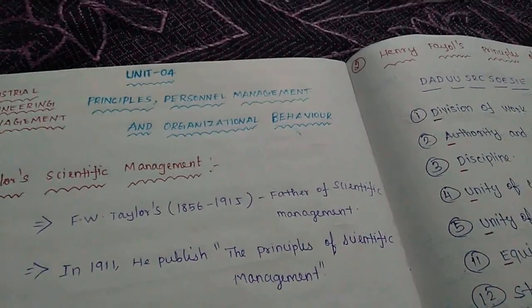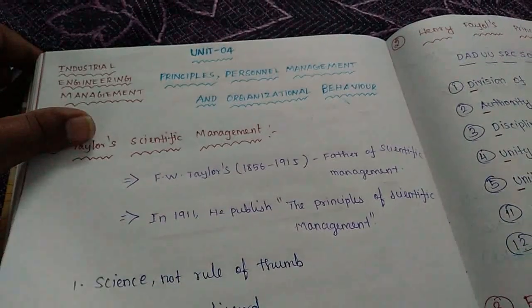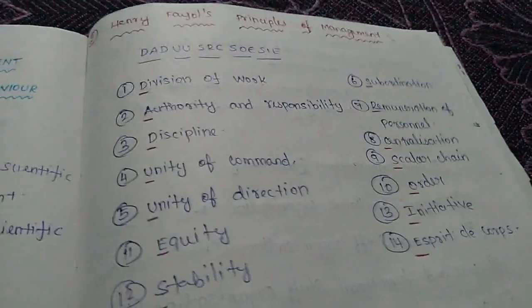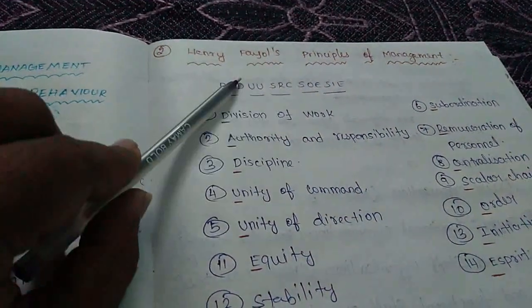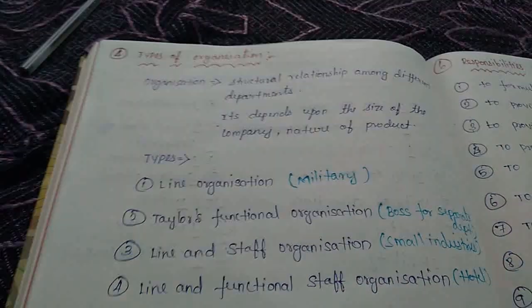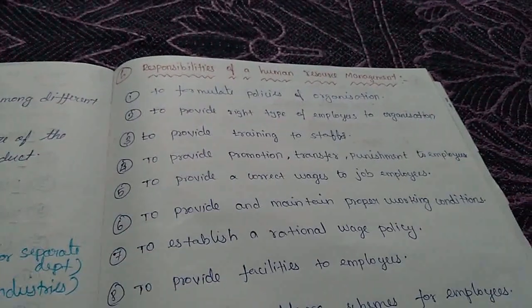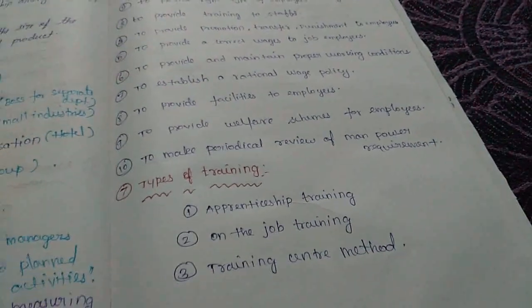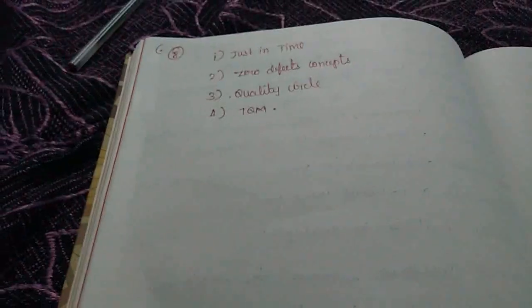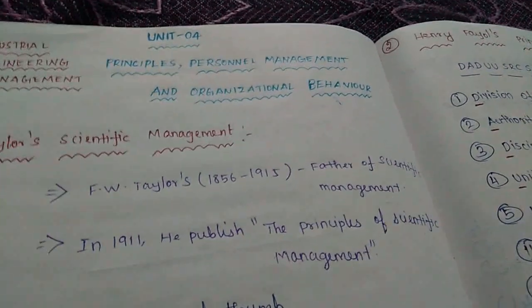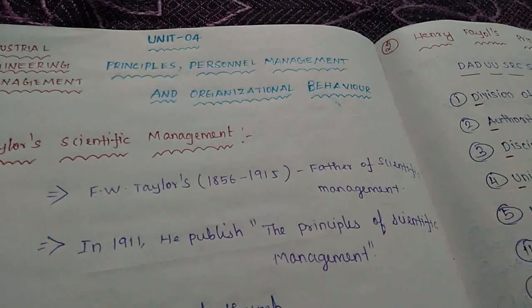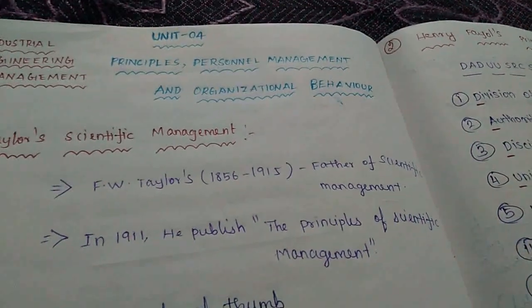Unit 4 is the name of Principles of Personal Management and Organizational Behavior. First question: Taylor's Scientific Management — explain 5 points. Henry Fayol Principles of Management — shortcut: Dad UU SRC SOE SAE. Function of Management, Types of Organization, Controlling Function, Responsibility of Human Resource Management, Types of Training — 2 marks and 5 marks. Just in Time, Zero Defect, Quality Circle, TQM — Unit 4 IAM. Thanks for watching. Please subscribe to our channel and comment, and support our channel. Thank you.